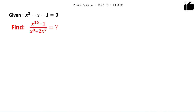Hello friends. In this problem we have been given the value of one expression and then you have to find the value of another expression. You have been given that x squared minus x minus 1 equals 0. Then you have to find the value of x to the power 16 minus 1, divided by x to the power 8 plus 2x to the power 7.